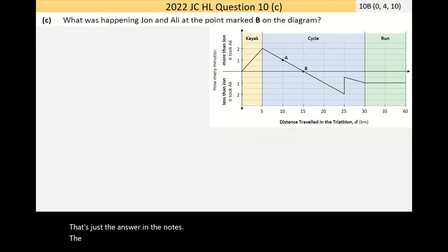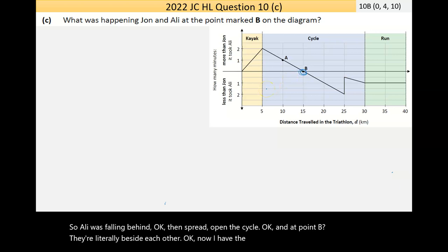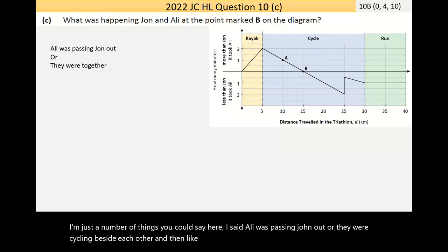Now part C then says, what was happening to John and Ali at the point marked B on the diagram? So I've copied the B here. So Ali was falling behind, then sped up in the cycle, and at point B, they're literally beside each other. Now I have the answer on the notes here. There's any number of things you could say here. I said Ali was passing John out or they were cycling beside each other. And then Ali would have been going faster, like getting away from John.